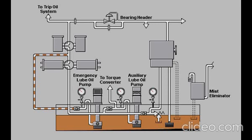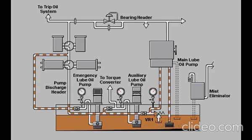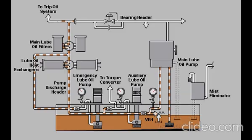When the gas turbine is operating at 100% speed, lubricating oil is pumped from the lube oil tank by the main lube oil pump and is delivered to the pump discharge header. VR1 limits the discharge pressure of the main lube oil pump to 101 PSI. Lube oil is cooled in the active heat exchanger, cleaned in the active oil filter, and passes through an orifice plate to the bearing header.